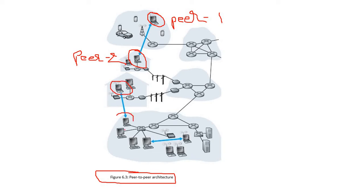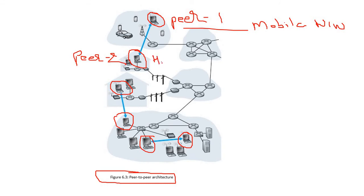One peer communicates with another peer — from the same network or a different network. These are peers of the mobile network, while another peer is from the home network. One peer from home network and one from enterprise network, or both from the enterprise network. This type of architecture is known as peer-to-peer architecture.